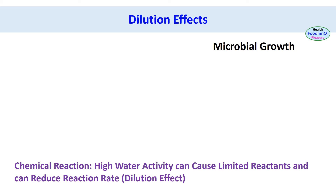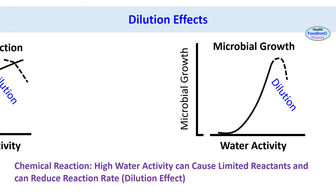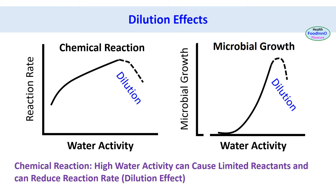In general, chemical reactions and microbial growth increase with increasing water activity. However, at very high water activity there is a low amount of solutes, which can mean limited nutrients for microbes. This can cause reduced microbial growth and is called the dilution effect. A similar situation applies to chemical reactions. Therefore, this dilution effect also cannot be explained by the water activity concept.